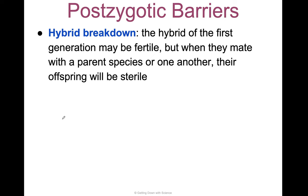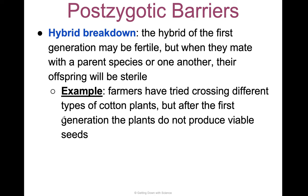Hybrid breakdown is when the hybrid of the first generation might be fertile, but when they mate with the parent species or one another, their offspring will be sterile. For example, when crossbreeding cotton plants, after the first generation the plants don't produce viable seeds — that's a breakdown of the hybridization of two species.